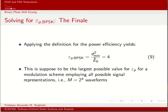The average bit energy — equal to the average symbol energy for a binary scheme — is P(0)·E_S2 + P(1)·E_S1 = A²T/2. Applying the power efficiency equation gives epsilon_p = 4. It turns out that for a modulation scheme that uses all available signal constellation points, a power efficiency of 4 is the best possible answer.